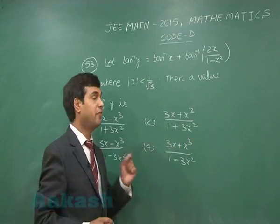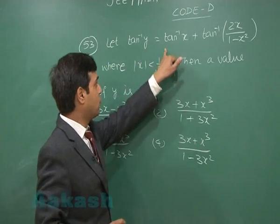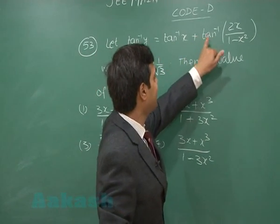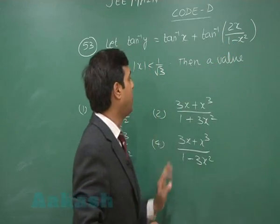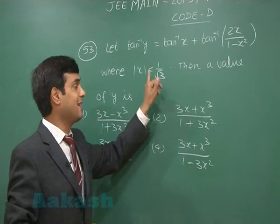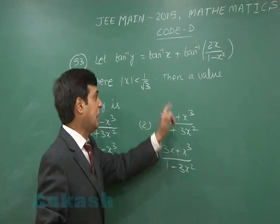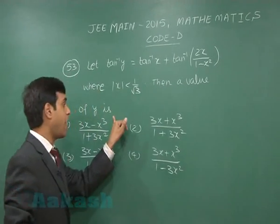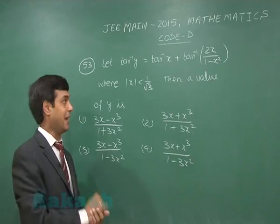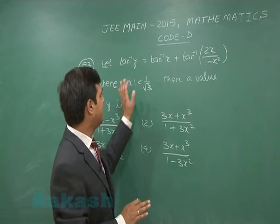Let us try question 53: tan⁻¹(y) = tan⁻¹(x) + tan⁻¹(2x/(1−x²)), where |x| < 1/√3. Find a value of y. Four options are given in terms of x. We will use the inverse tan addition formula.